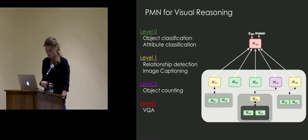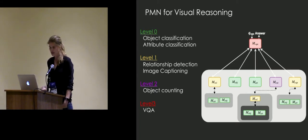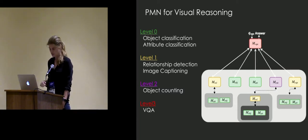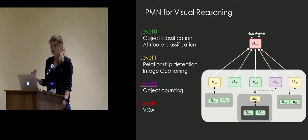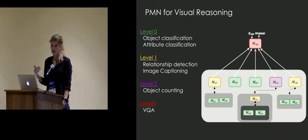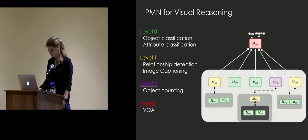For visual reasoning, at the simplest level — level zero — I have just object classifier or attribute classifier. Level one would be relationship detection, and I can have image captioning. A more complex task is object counting, because object counting relies on understanding relationships and the naming of objects. And then the final level is VQA, which really requires abstract reasoning.